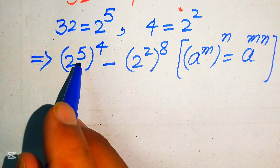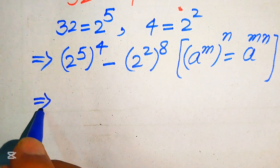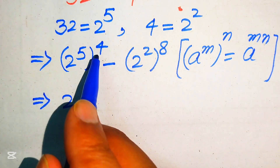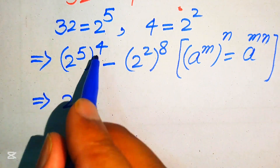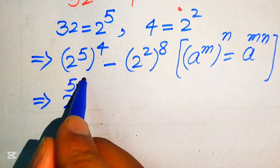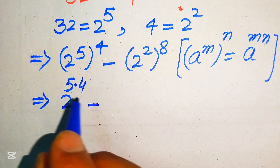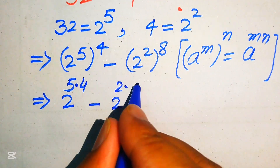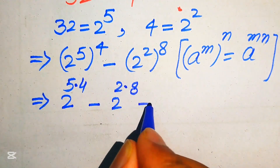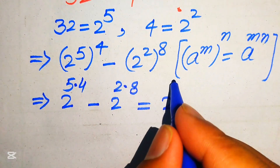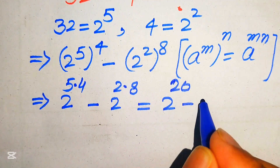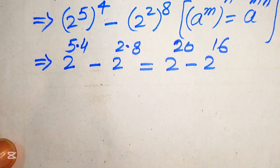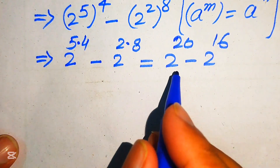According to this exponent law, we multiply the two exponents. So 2 to the power of 5 to the power of 4 becomes 2 to the power of 5 times 4, minus 2 to the power of 2 times 8. This gives us 2 to the power of 20 minus 2 to the power of 16.